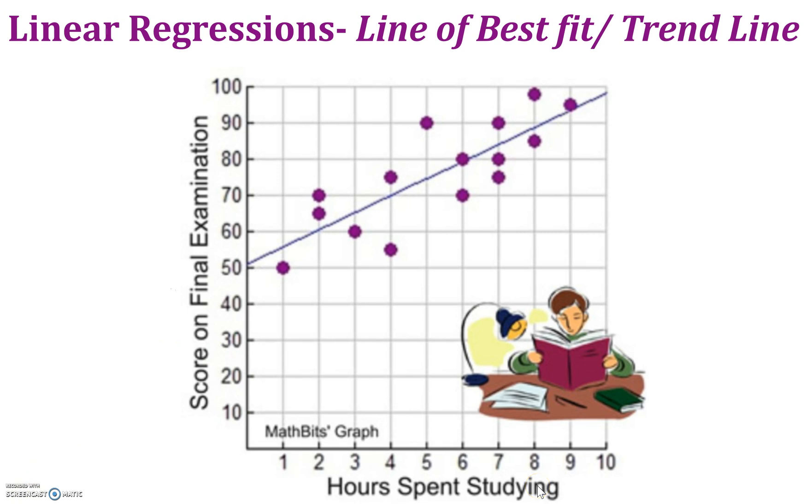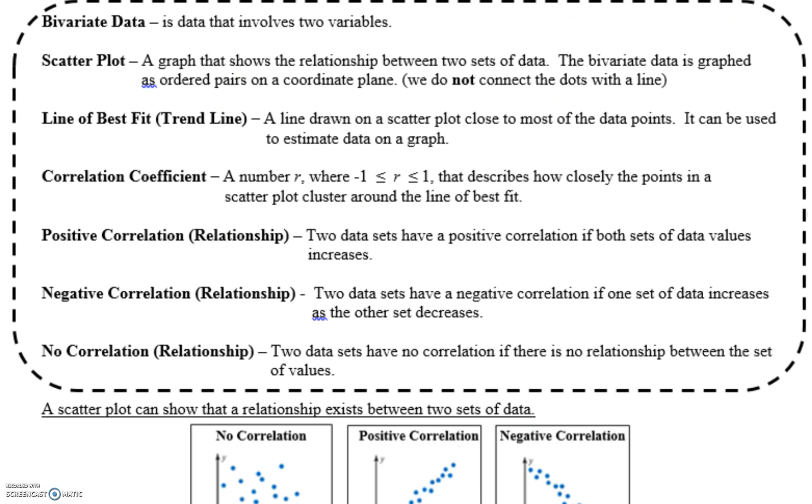Now we're just going to look at the vocabulary that's on your worksheet. So bivariate data is just data that involves two variables, so two things that you're comparing. The scatter plot we just talked about, line of best fit we just talked about.